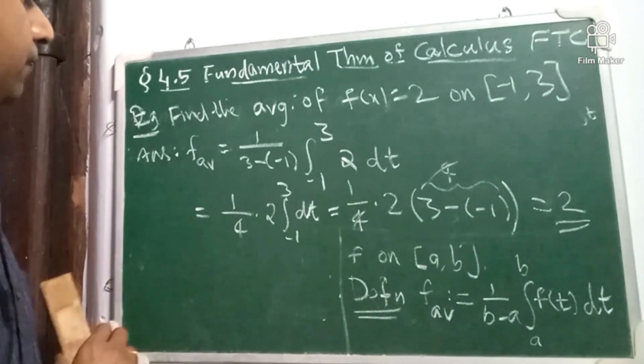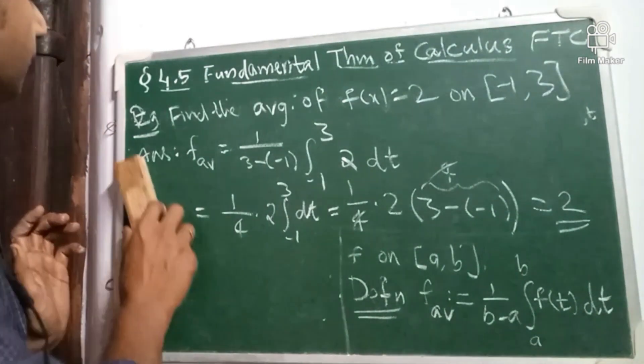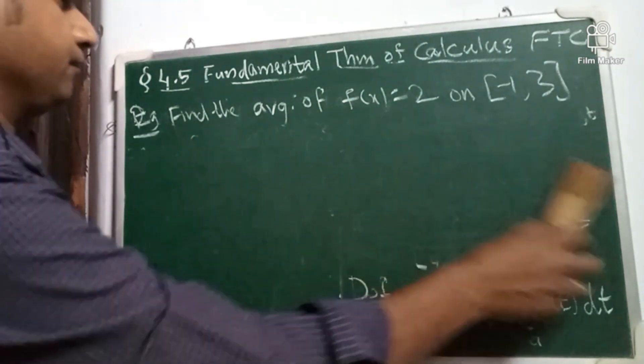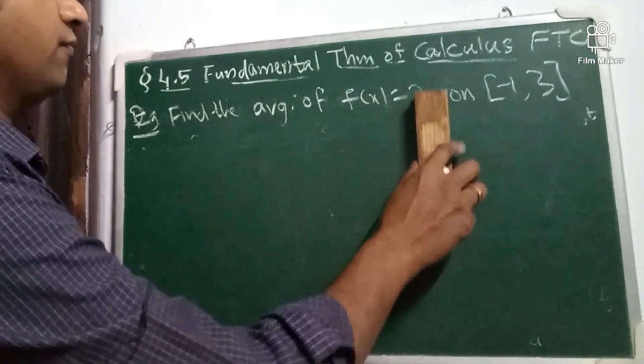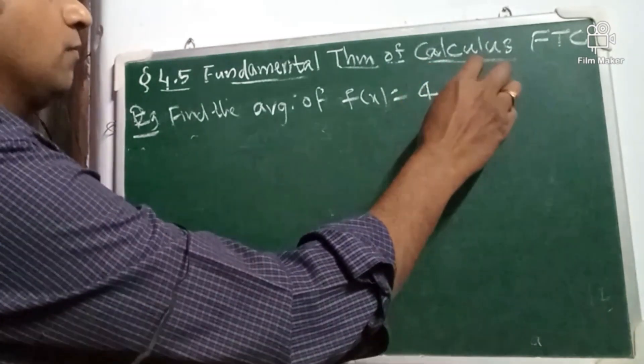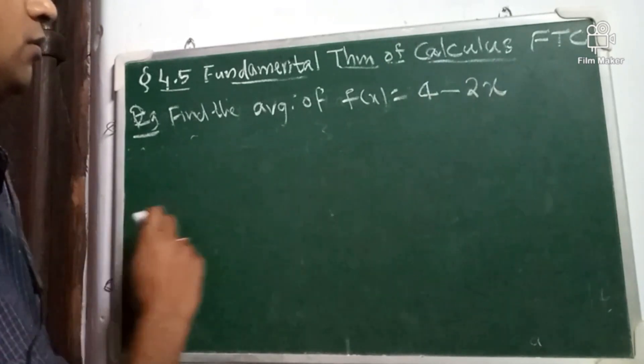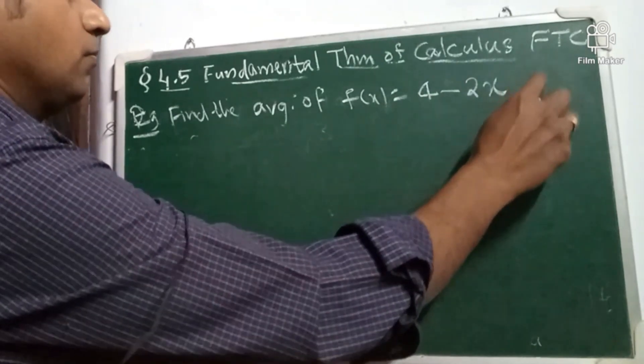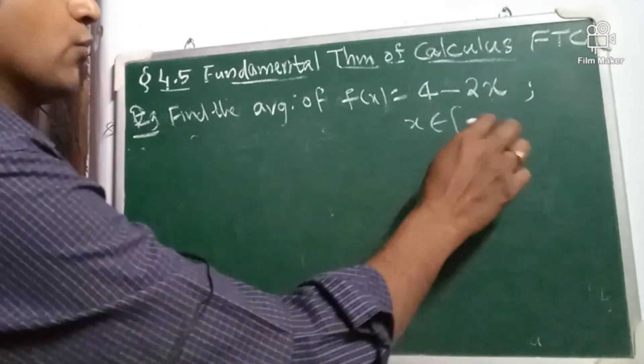Let us do another example. So, shall I erase this? Find the average of f(x) = let us do, let us say some other function, not a constant function. So 4 minus 2x on the interval, let us say 0 to 2.